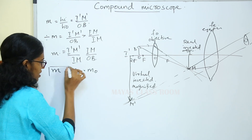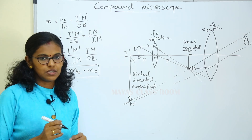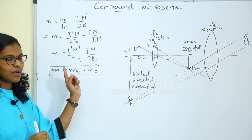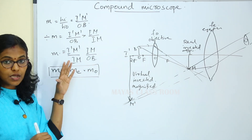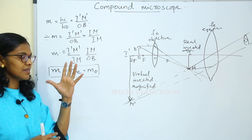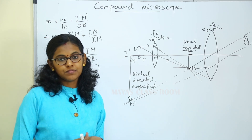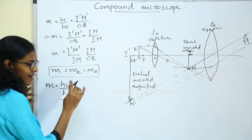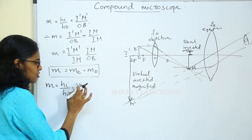Magnification produced by the compound microscope is the product of the magnification produced by the eyepiece and the magnification produced by the objective. Magnification M equals V divided by U, the ratio of image distance to object distance.